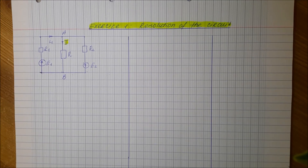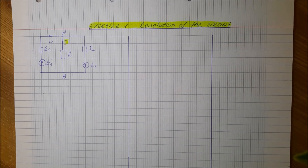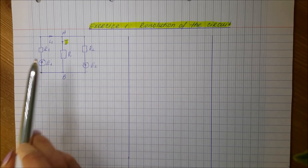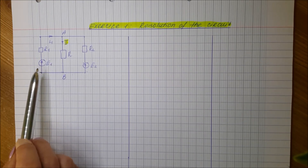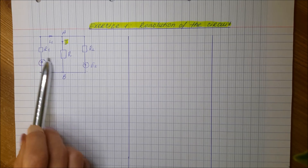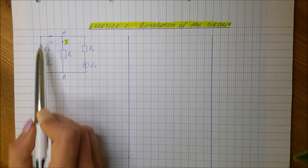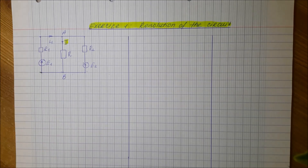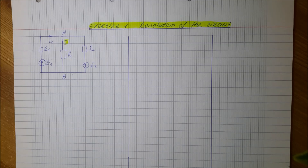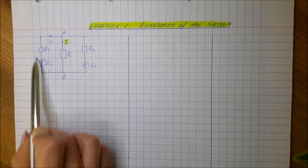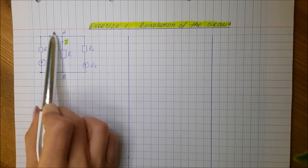It should be noted that in reality we are pretty free with conventions — it's only a convention, and we can even apply the receiver convention to a generator. That means the current arrow could oppose the voltage arrow. However, if we chose the current direction of I1 going against the voltage arrow E1, after performing the calculations we would find the current to be negative. So from the beginning, it's better to apply the generator convention to all generators and the receiver convention to all receivers.